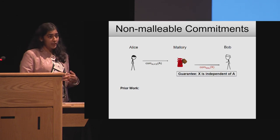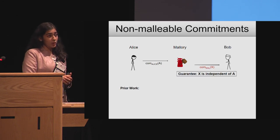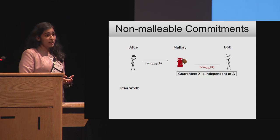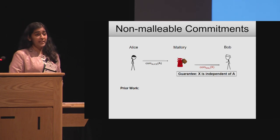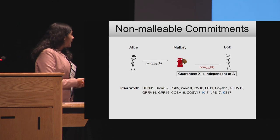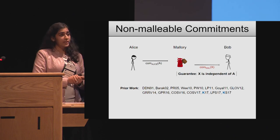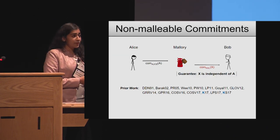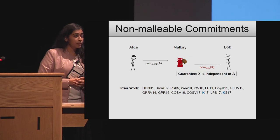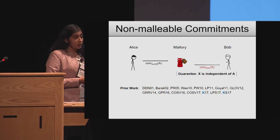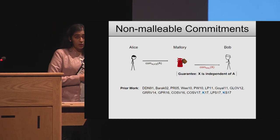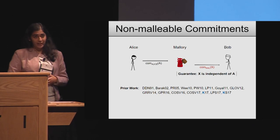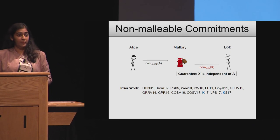There has been a lot of work trying to build commitments with such guarantees. They've unfortunately mostly been interactive. Very recently, there were two concurrent works, one of which got two-round non-malleable commitments, which adds a message to the interaction pattern.